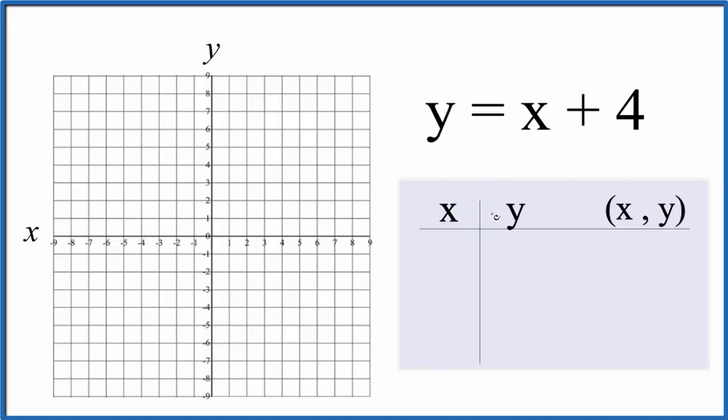I like to start out by putting 0 in for x because that'll be on my graph. 0 plus 4, that's 4. Let's just put 1 in. 1 plus 4 is 5, and then negative 1. Negative 1 plus 4, that gives us 3.